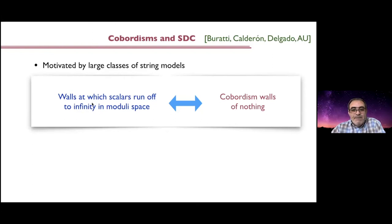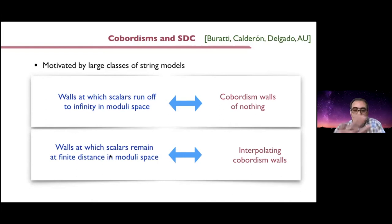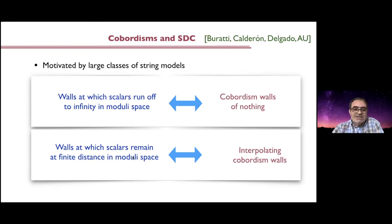The basic lesson is: if you have walls at which the scalars are running off to infinity in moduli space — this happens at finite distance in spacetime but the scalars run off to infinity in moduli space — then the resolution corresponds to cobordism walls of nothing, so spacetime ends at those locations. On the other hand, if you have walls at which the scalars are at finite distance in moduli space when you reach the wall, they correspond to interpolating cobordism walls — some new degrees of freedom appear but you can continue through to a new phase, because you're still at finite distance in moduli space and have somewhere to run. If you hit infinity in moduli space, you must also stop running in space.